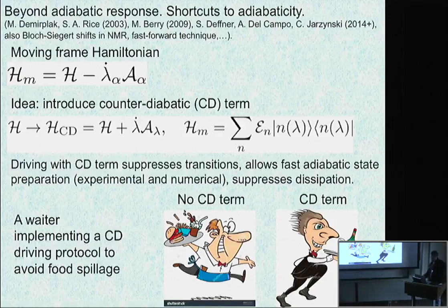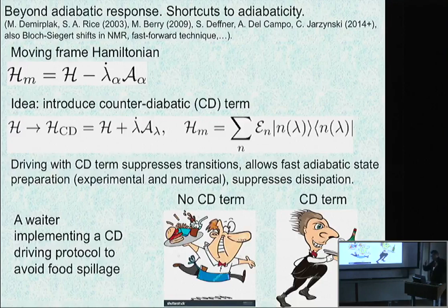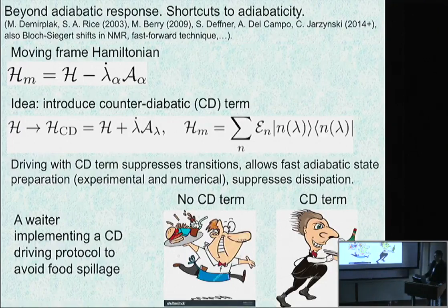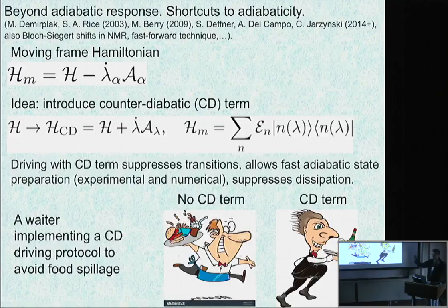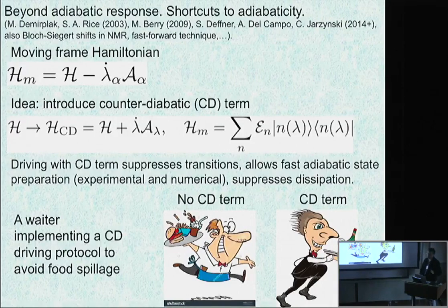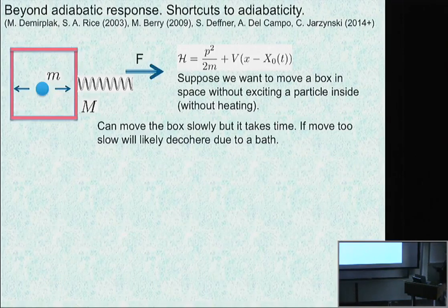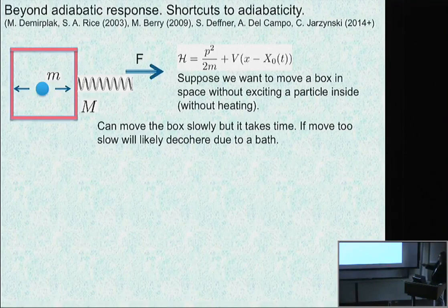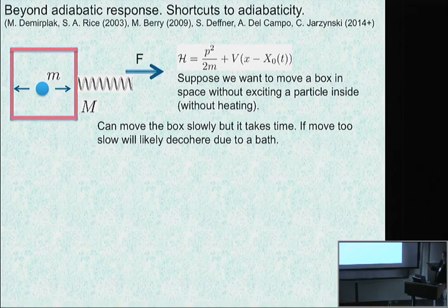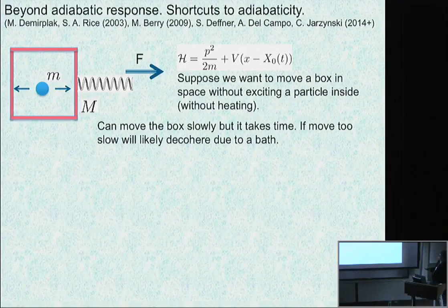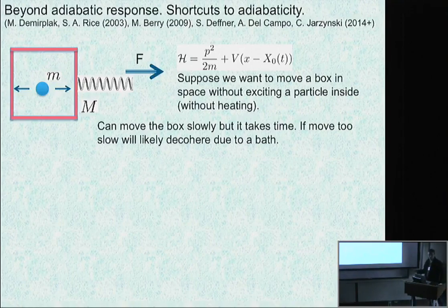If the waiter implements a fancy move, will counter this emergent inertia and all other forces, then it will work pretty well. This is really counter-diabatic driving. Why does it cancel dissipation? Because he implements extra gravity which cancels force of inertia. By tilting, he introduces extra gravitational force. Inertia wants to push water back, but this tilt pushes it in the opposite direction. We have a particle in a box and we want to move the box without exciting a particle. If we move it fast, we'll excite this particle to high-energy states.